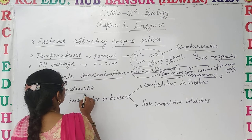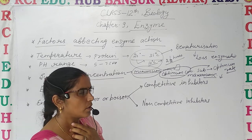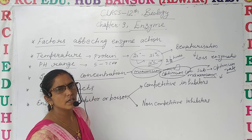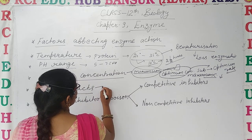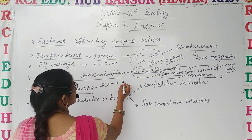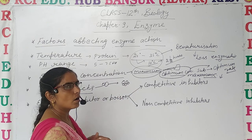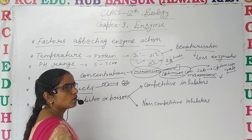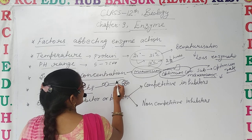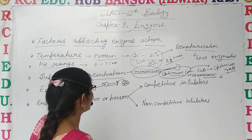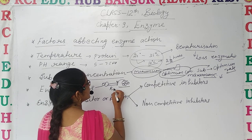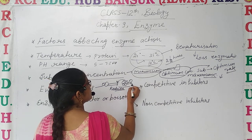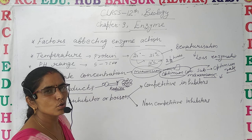The next factor is end product concentration. In one way or another, end products also affect the activity of enzymes. For example, when all enzymes combine with substrates and form end products, if those end products accumulate in increasing numbers, then after establishment of equilibrium, the end products have a reciprocal effect on enzyme activity and reduce it. This means if the end product accumulates and cannot be utilized, there is no further enzymatic activity.